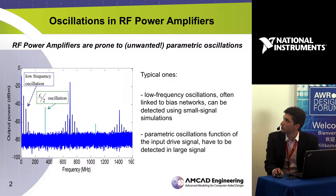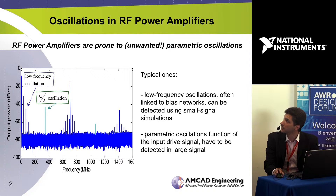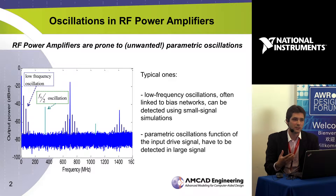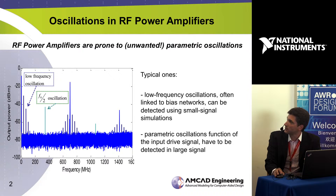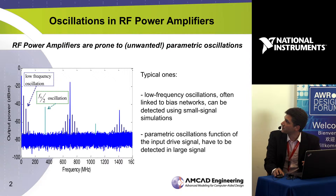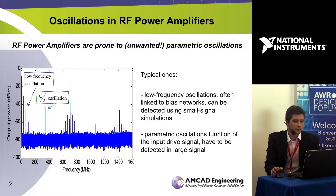We have two main families of oscillations which can appear in a PA. The first one is low-frequency oscillations, generally linked to the biasing circuits of your PA. This kind of oscillation can be detected using small-signal simulations and suited methods. The second family is parametric oscillations, for example as a function of the input drive signal, and these have to be detected using large-signal simulations.